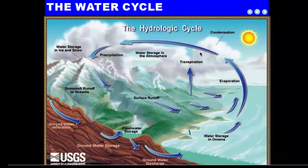As we were just talking about, clouds filled with liquid water droplets bump into each other. When one water droplet meets another, you get a bigger water droplet. The air blows these water droplets around and they get bigger and bigger until they get too heavy — and that's when they become precipitation.